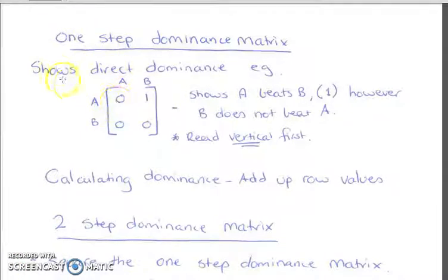So a one step dominance shows a direct dominance meaning directly related. For example, is A beating B? Is B beating A? That kind of stuff. So this one here shows that A beats B. So that's what the one represents. But B does not beat A, so this one's represented by zeros.